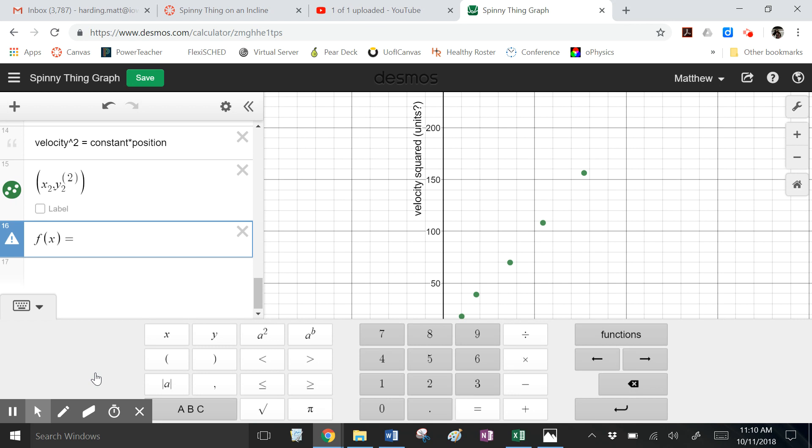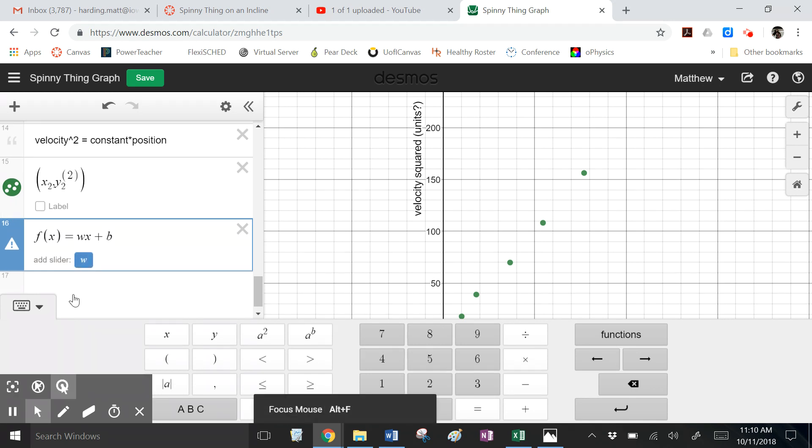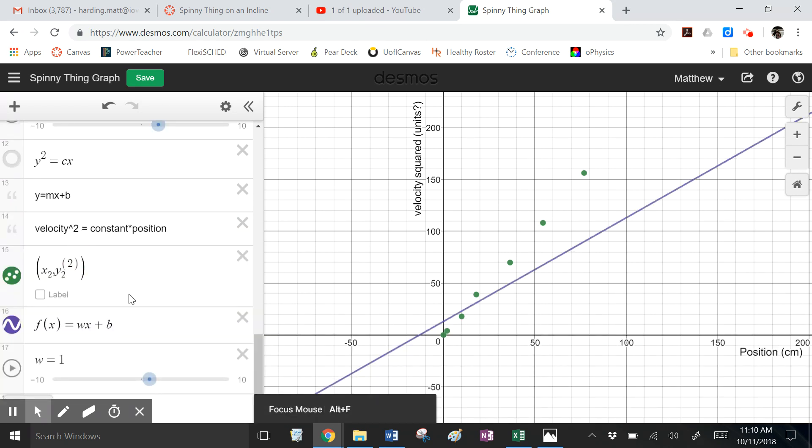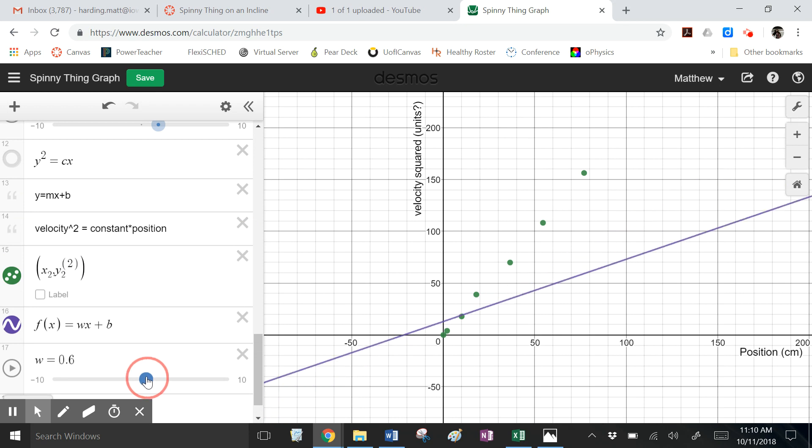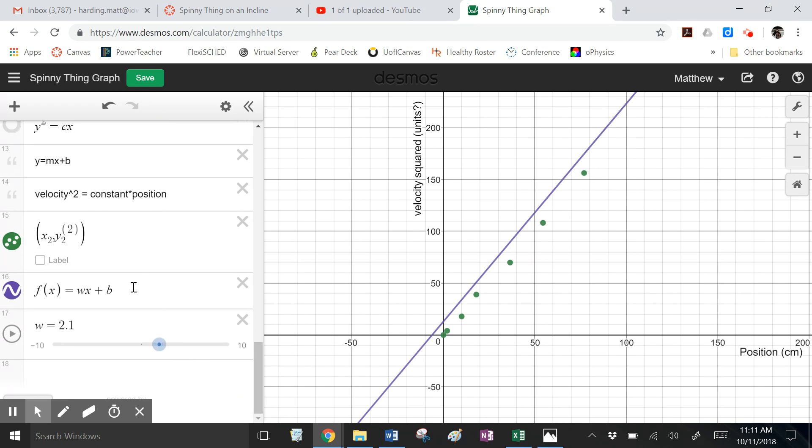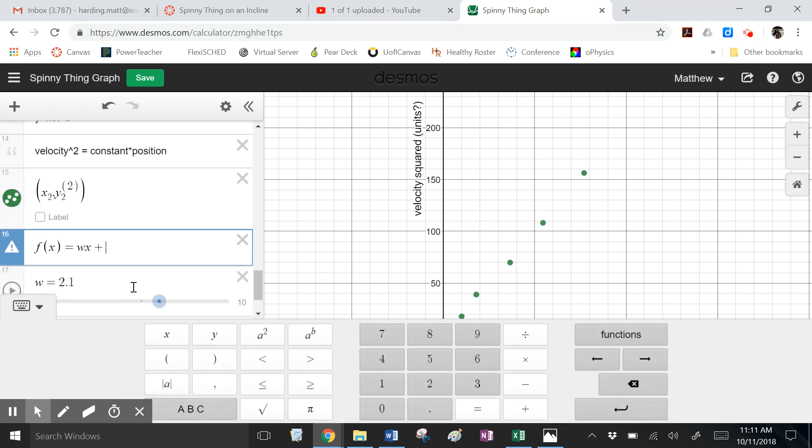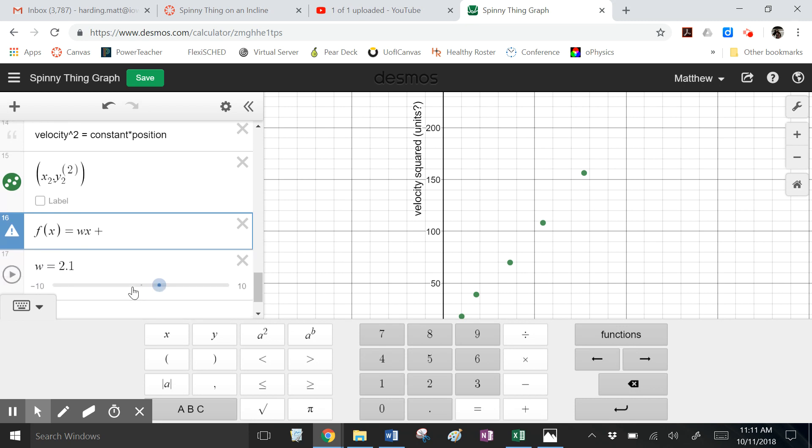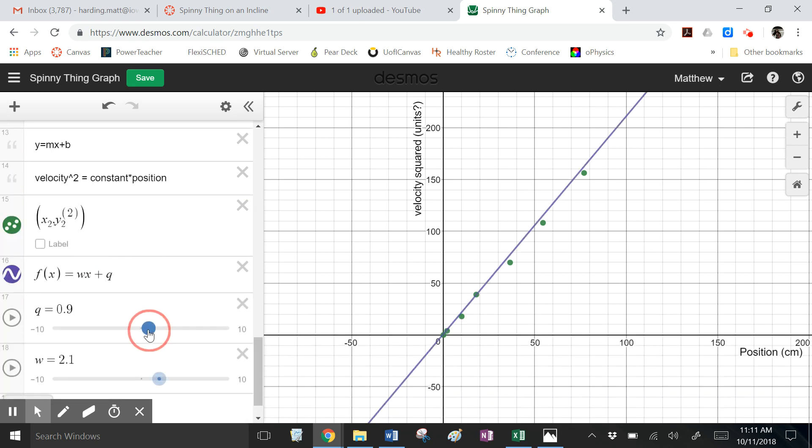I want m. I've got to give it some weird name. Let's go wx plus b. Because I already used m somewhere else. So w. I've got a slider for that. I'm going to adjust that until my dots line up with it. I already used b for something else. So let's call this q. Add a slider for q.